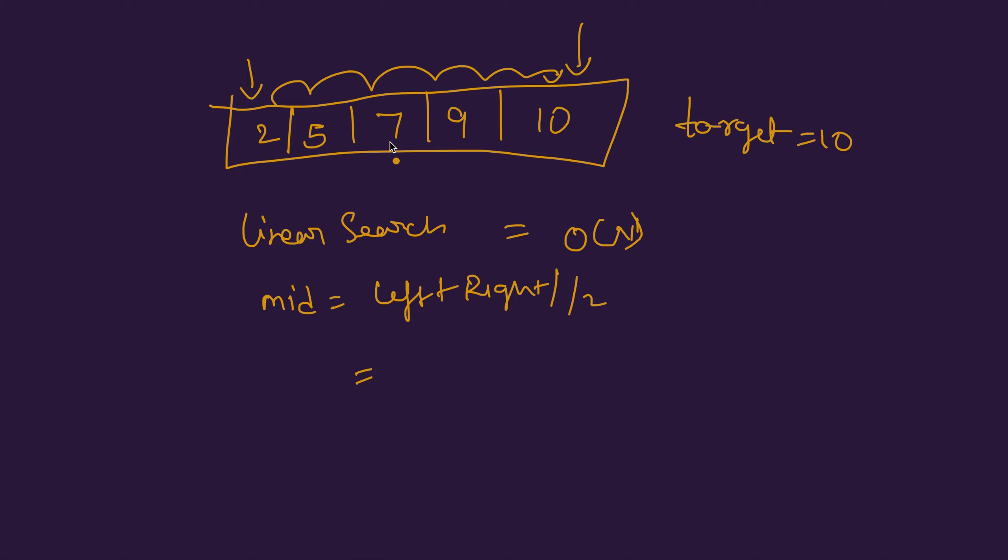In this case mid would be 2 which is 7. Once we find the mid, we check if target is equal to the value at the mid, so a[mid], then we found the element we are looking for.